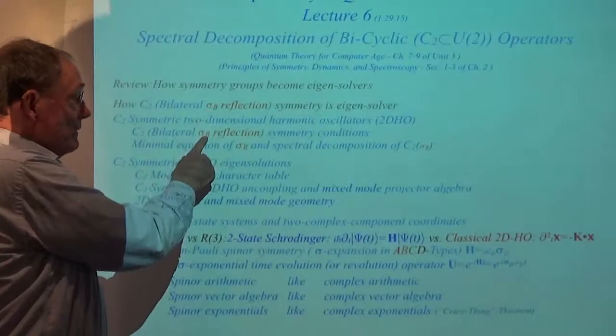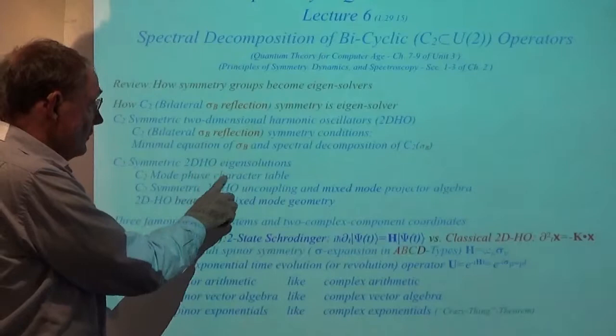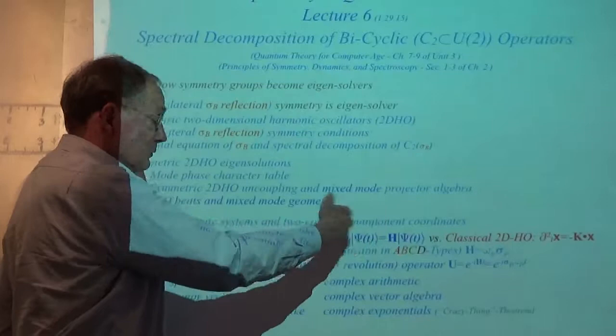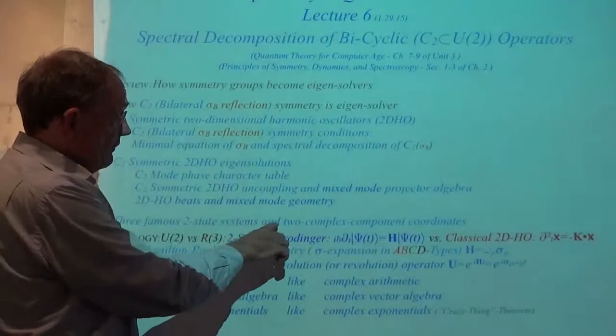To use a pun, we're talking about reflection symmetry here. The first of the Pauli matrices that we deal with is a feature today as well. The eigensolutions and the character table associated with that group are going to introduce the simplest example of a character table, the simplest example of mixed-mode dynamics and geometry, but also projection algebra that goes with it. Then we're going to show three famous two-state systems.